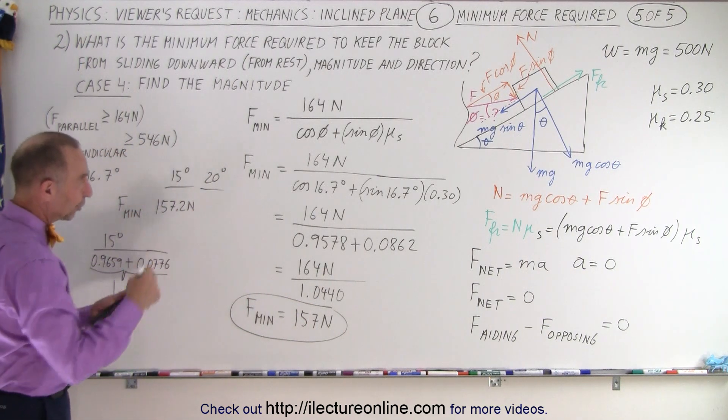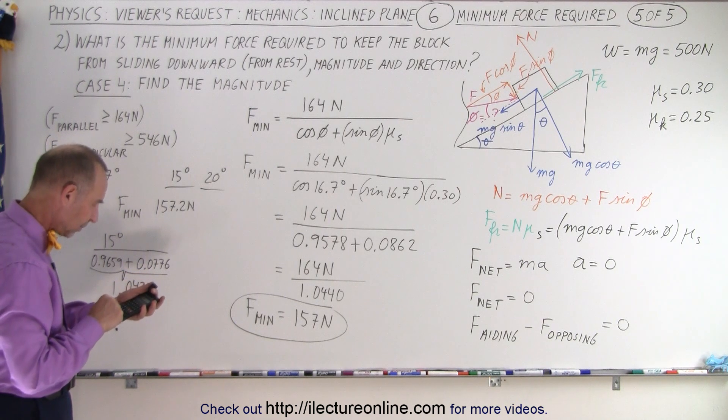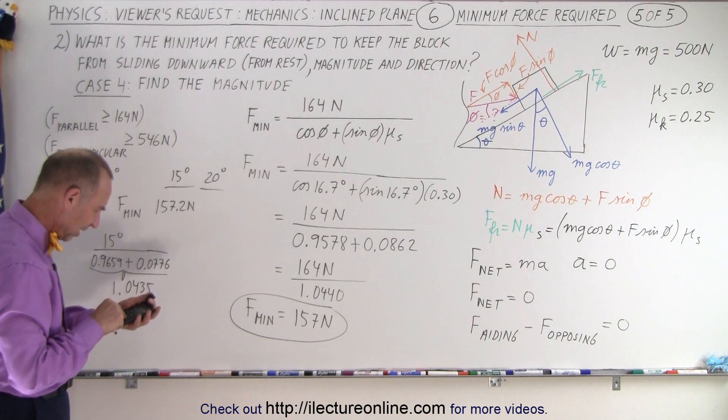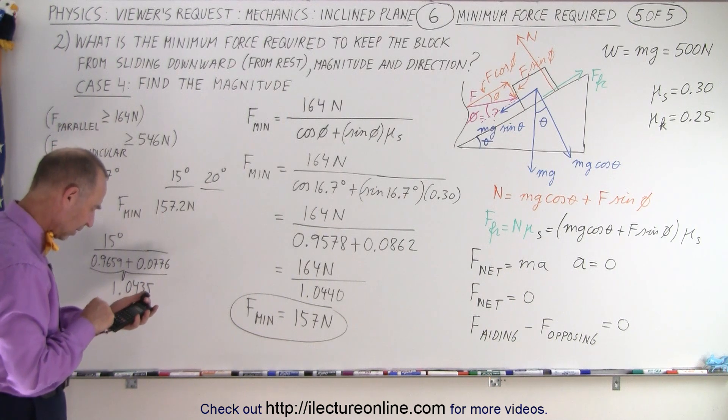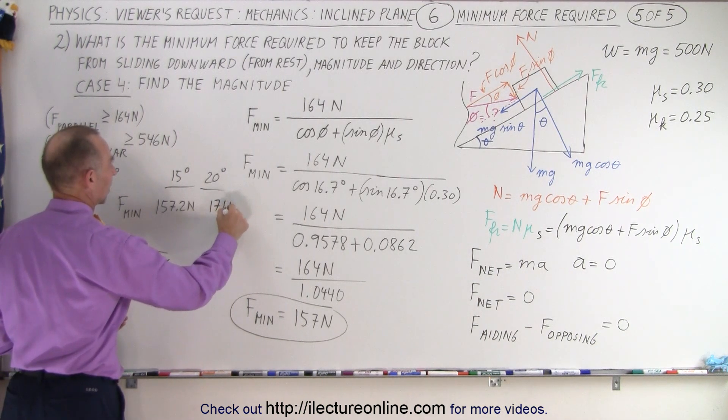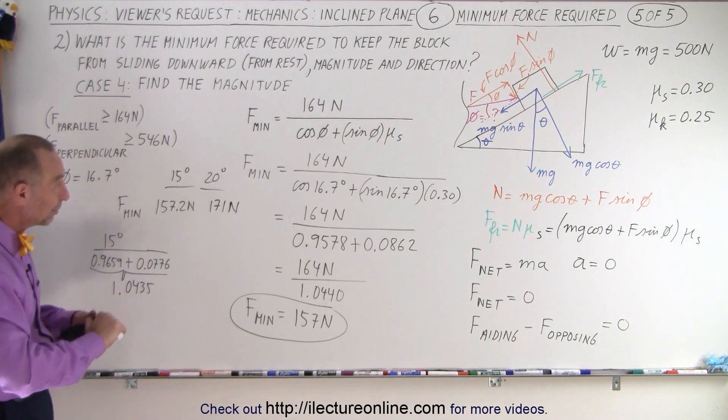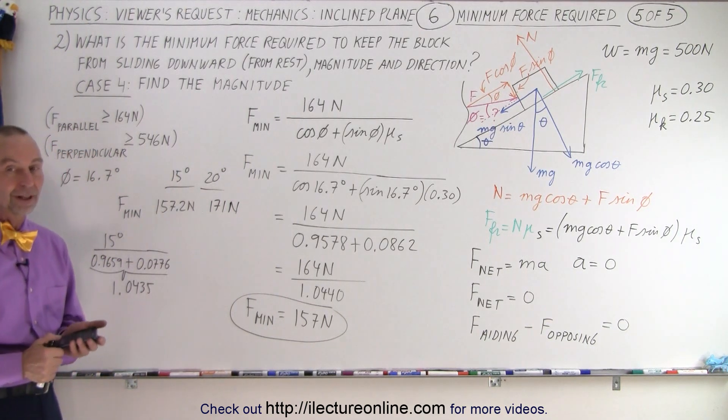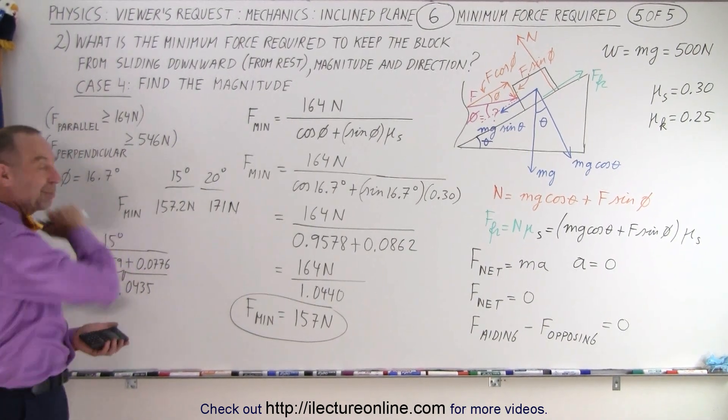And then at 20 degrees, it'll go the other way again. So you have 20, take the cosine, plus 20, take the sine, times 0.3, take the inverse of that, and times 164, and you get 171. So then you see that once you get past the 16.7 degrees and you get a bigger and bigger angle, you'll need more and more force to keep it from sliding down. It's the sweet spot, it's right when the angle is 16.7 degrees.